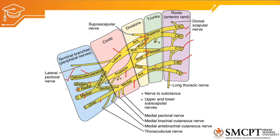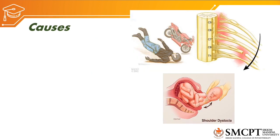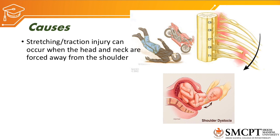Nerve injuries to the musculocutaneous, axillary, radial, median, and ulnar nerves are distal injuries to the brachial plexus, which we have already discussed. Now we will discuss injuries proximal to these — that is, injury to the lateral cord, medial cord, or the brachial plexus itself. The main cause of brachial plexus injury is stretching or traction injury, which occurs when the head and neck are forced away from the shoulder.